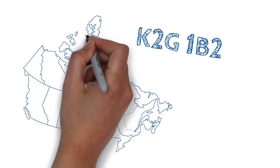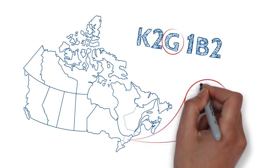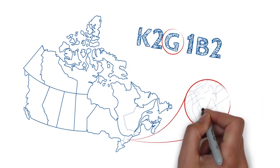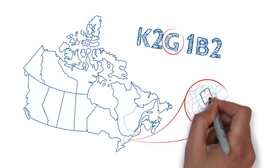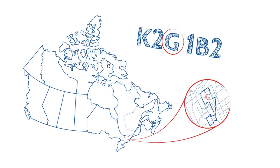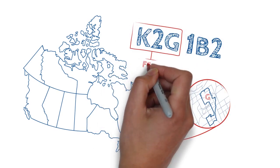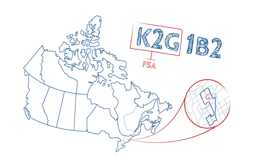When you add the third character of the postal code, it further subdivides a town or a city. This means that we now know the exact part of the city, town, or other area where the mail is to be delivered. These first three characters represent the FSA, and any mail that starts with these same three characters will be delivered to this region.